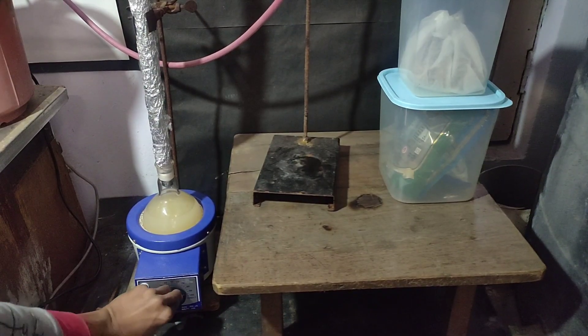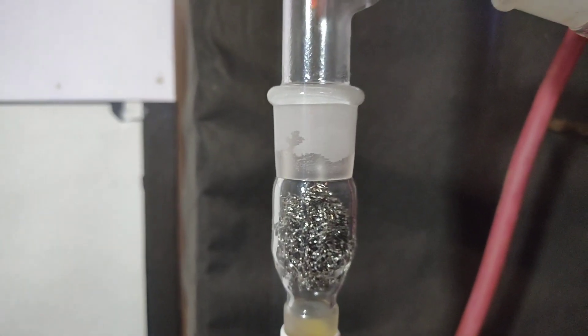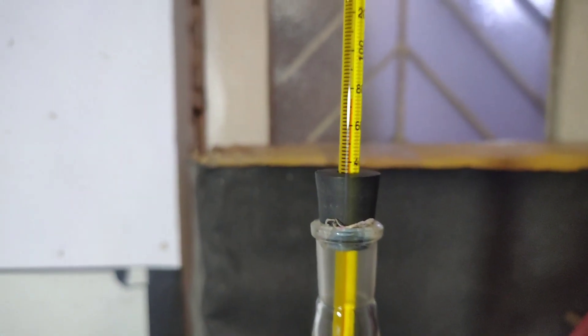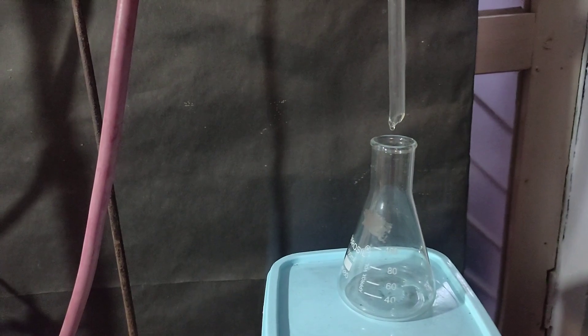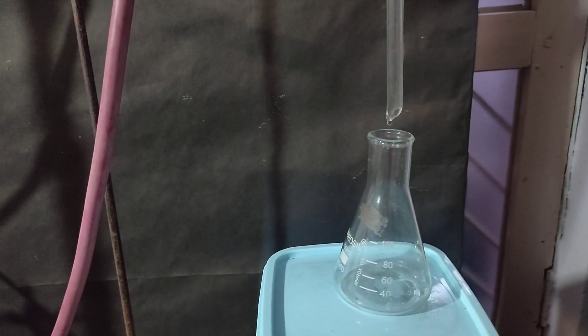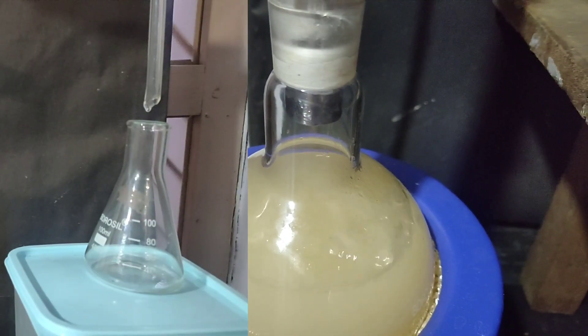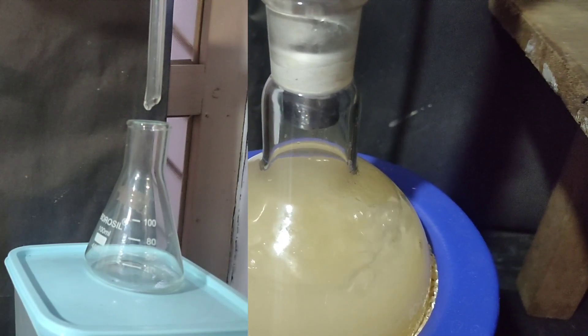I switched on the heating mantle and now vapour has reached the top of the column and the temperature has started to rise in the thermometer. My thermometer has an error of minus 2 degrees Celsius. So instead of 78 degrees Celsius, I started getting distillate at 76 degrees Celsius. At this moment, the heating mantle was set to 30 so as to not let the temperature rise above 78 degrees Celsius in the still head.